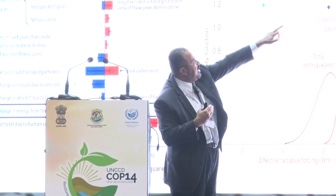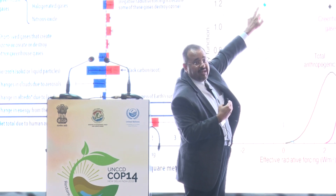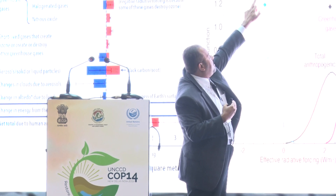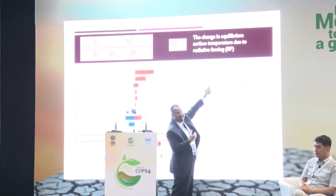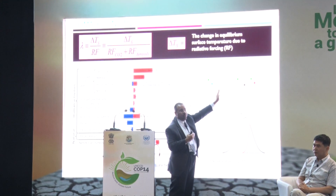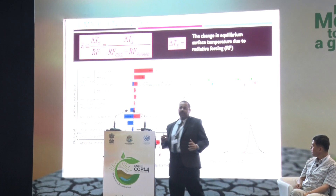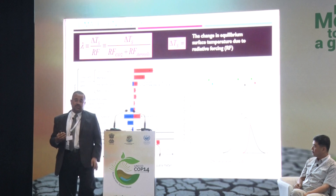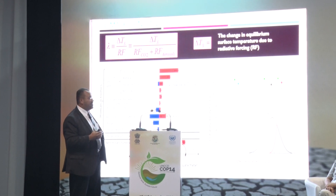The error bars refer to previous assessment reports — the green error bar from AR4, and the blue one from AR5. Over the years, the dust which used to cause a lot of cooling is now causing less cooling — it's actually moving in the warming direction. Meanwhile, greenhouse gases are adding even more warming to the system. There is a lot we still don't fully understand in terms of aerosol microphysics and how they affect climate sensitivity — another reason for the importance of understanding sand and dust storms.